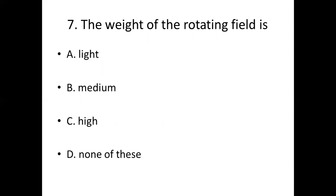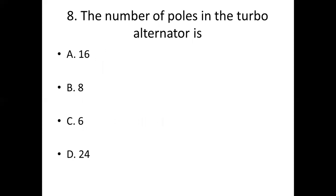Eighth bit. The number of poles in the turbo alternator is. Option A: 16. Option B: 8. Option C: 6. Option D: 24. Answer: Option D. 24.